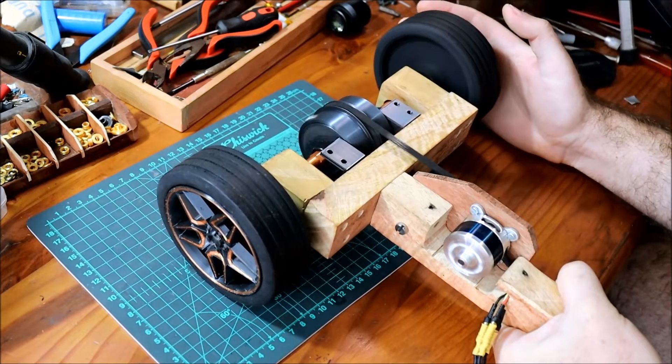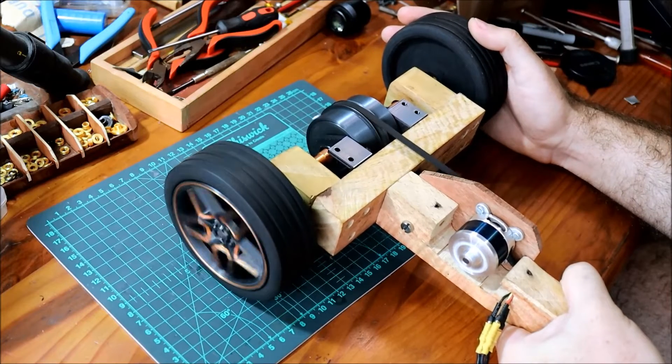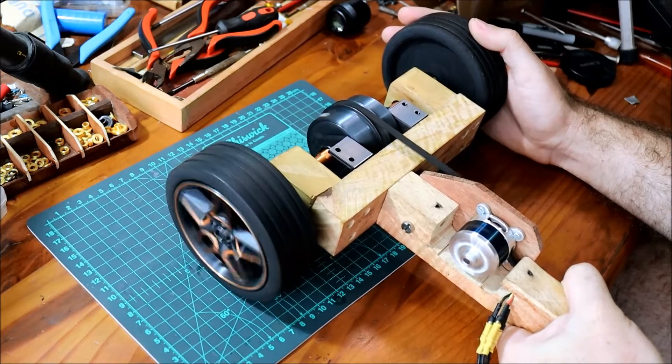But the minute I apply resistance to the free spinning wheel, the wheel with traction again receives its portion of the torque.